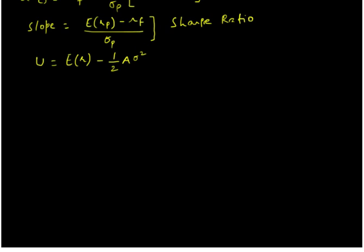We need to determine how much to invest in risky and risk-free assets respectively. Through some calculus, we can maximize the investor utility function with respect to Y, which is the weight on the risky portfolio. Once we know Y, the weight on the risk-free asset is simply 1-Y.